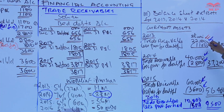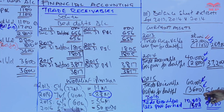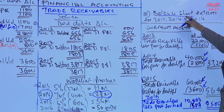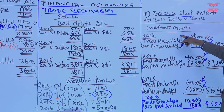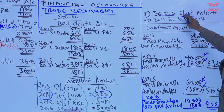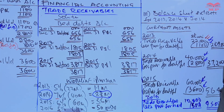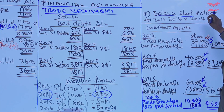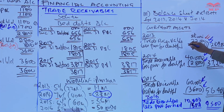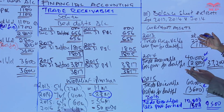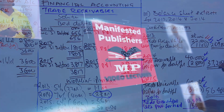That's how you account for trade receivables in the balance sheet. Every time you prepare the balance sheet and have trade receivables, you take the trade receivables as provided in the question at the end of the accounting period, deduct the provision for that same date, and you have the net debtors.